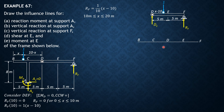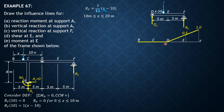Plotting the influence line for RF: it is zero from B to D (0 to 10 m). From D to F, RF = (1/10)(x − 10). When x = 10, RF = 0; when x = 15 (at E), RF = 5/10 = 0.5; when x = 20 (at F), RF = 10/10 = 1. So RF is 0.5 at E and 1 at F.